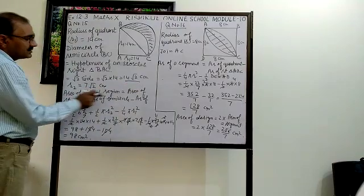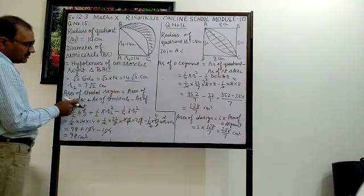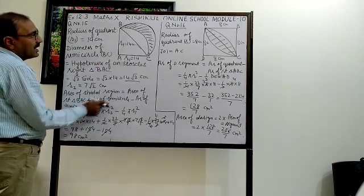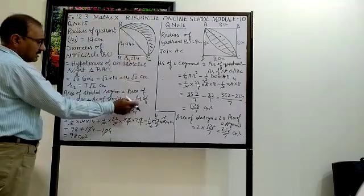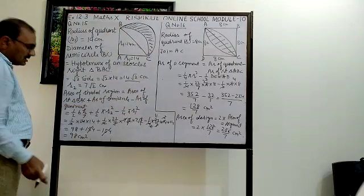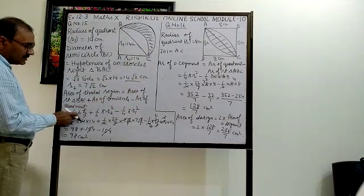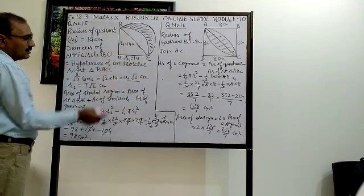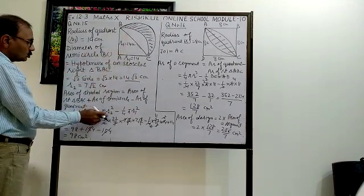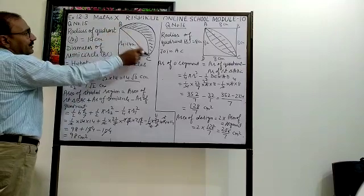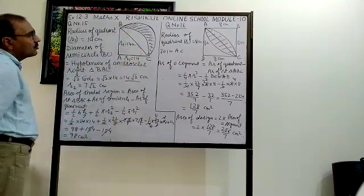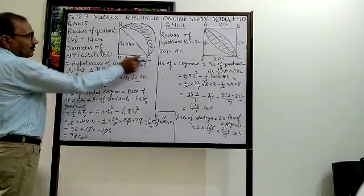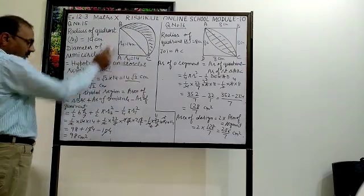Area of the shaded region = area of right triangle ABC + area of semicircle with diameter BC − area of quadrant. That is: ½ × base × height + ½ × π × R₂² − ¼ × π × R₁². Base is 14 and height is also 14.